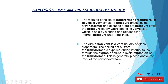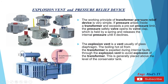Explosion vent and pressure relief device. The working principle of the transformer pressure relief device is very simple. When pressure arises inside a transformer and exceeds a precise pressure limit, the pressure safety valve opens its valve, which is held by a spring, and releases the internal pressure until it declines. The explosion vent is usually a glass diaphragm through which the boiling hot oil from the transformer is expelled during internal faults, to avoid an explosion of the transformer. This is generally placed above the level of the conservator tank. In this picture we can see the location of the explosion vent, which is located above the level of the conservator tank.